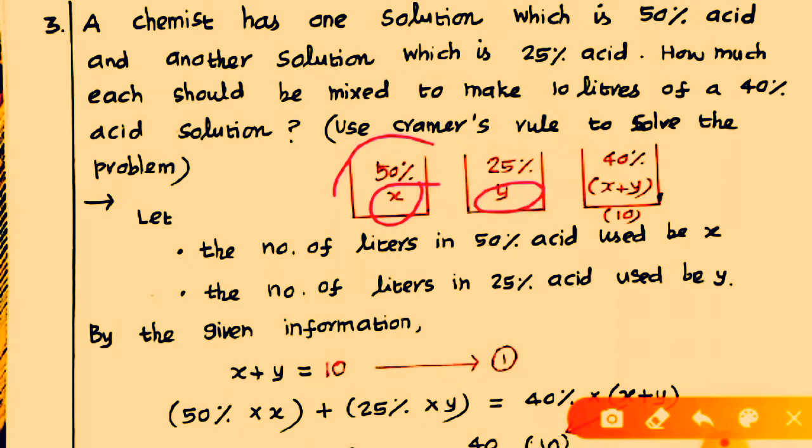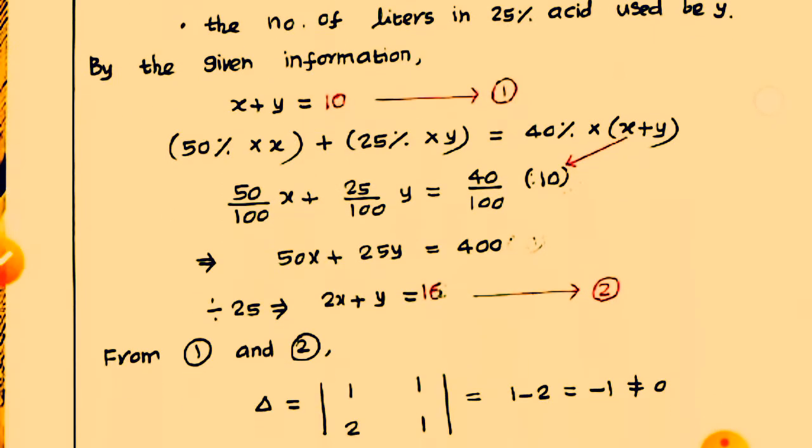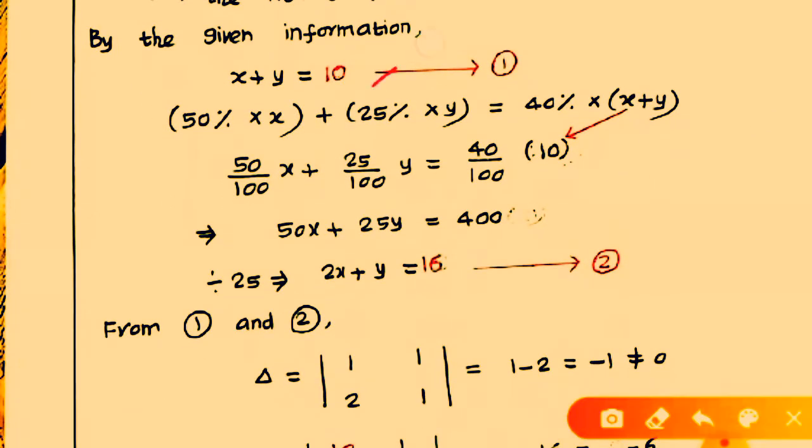So if you add the two solutions, you get 40% acid content. X plus Y is how X plus Y equals 10 liters. So now by the given information, X plus Y is equal to 10.